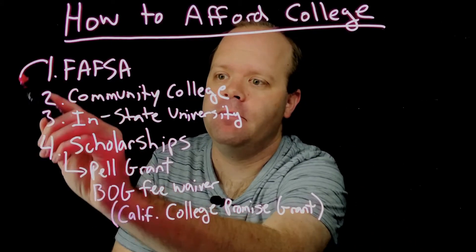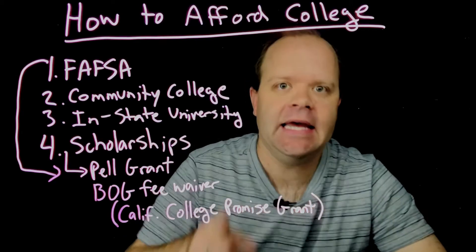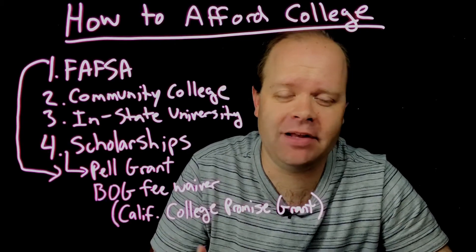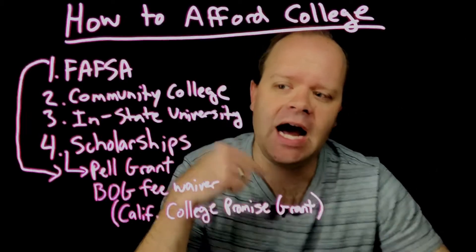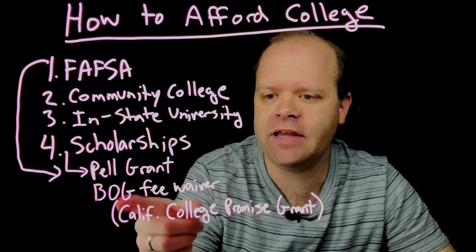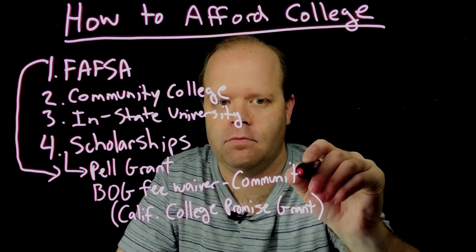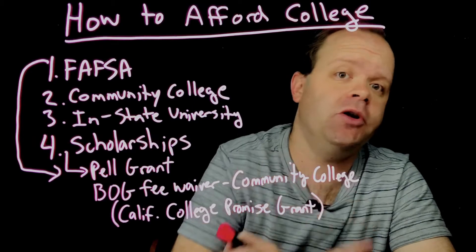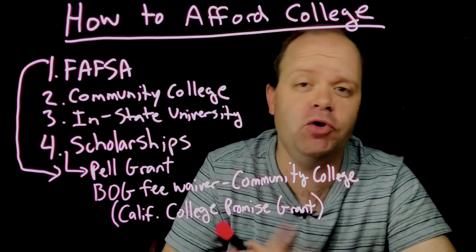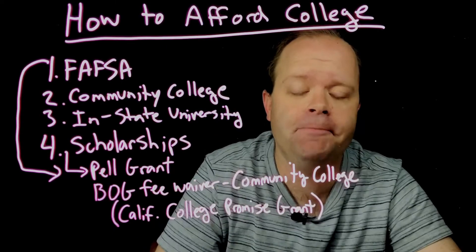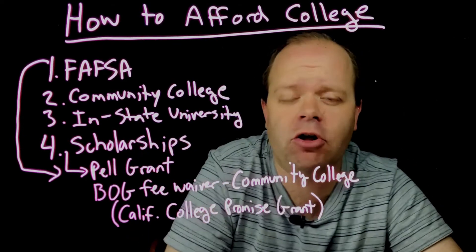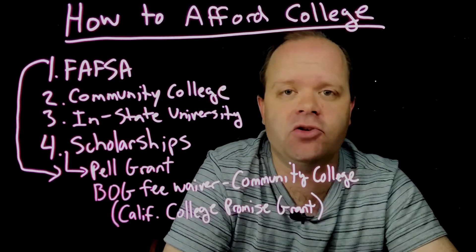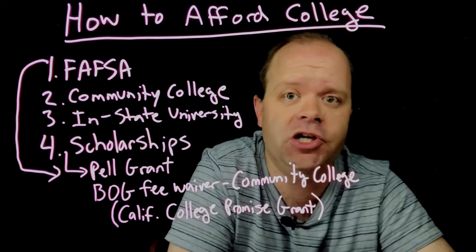Once you apply for the FAFSA, it puts you in the running for the Pell Grant — free money that pretty much everybody gets. This next one only applies to people in California, but I'm sure there's something similar in other states. What was called the BOG fee waiver is now called the California College Promise Grant, and it basically waives your tuition fees if you're going to a community college. So with a BOG fee waiver, you might be able to go to a community college completely tuition free. Then with a combination of a Pell Grant and any other scholarships — specifically ones geared toward that particular community college — that will take care of other school supplies, so you could technically go to your community college for free.